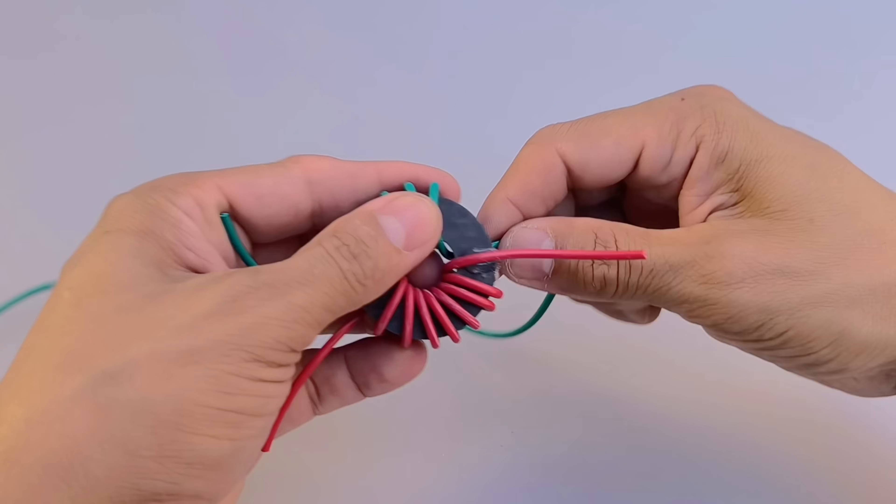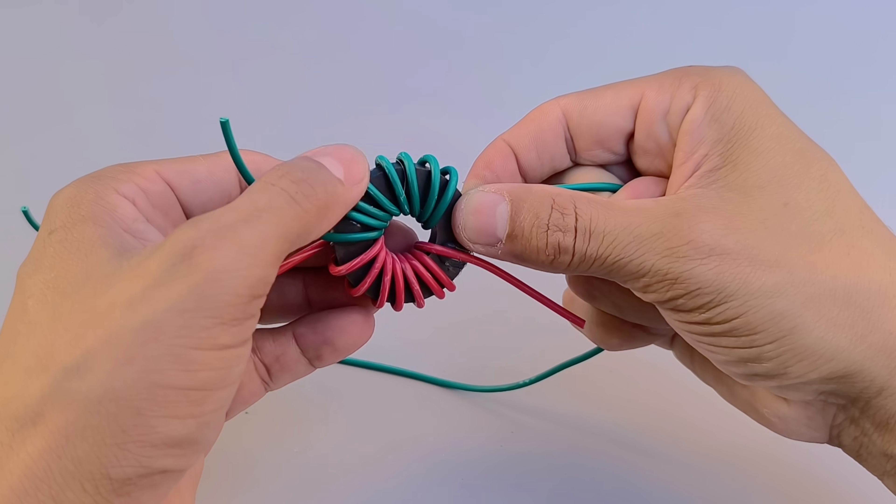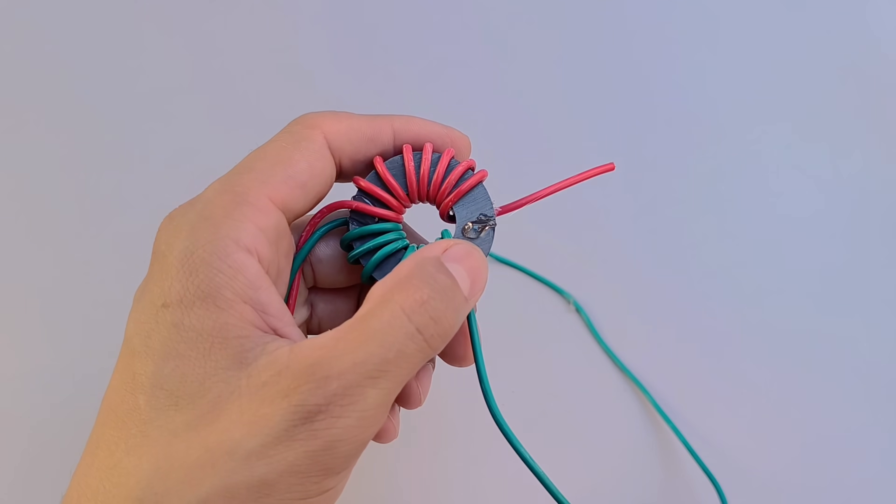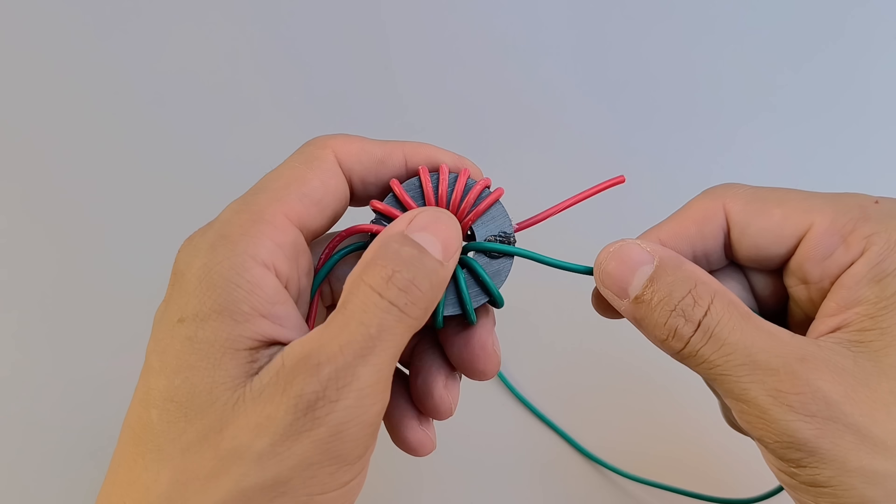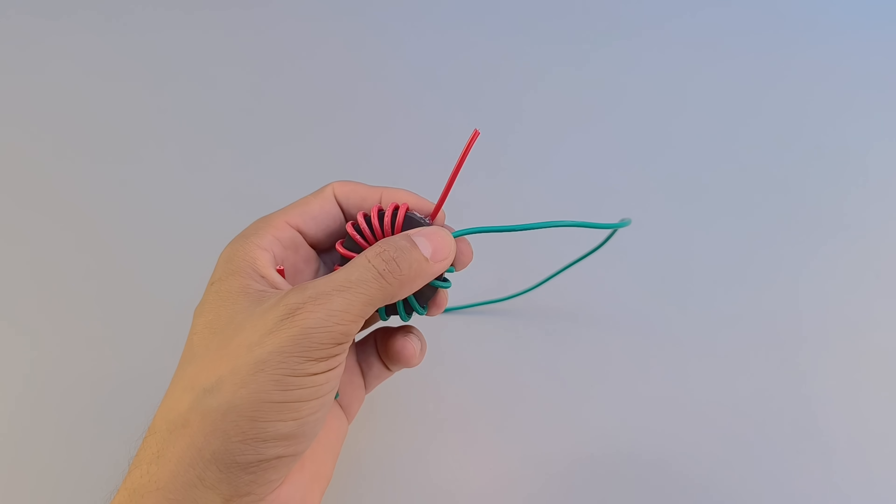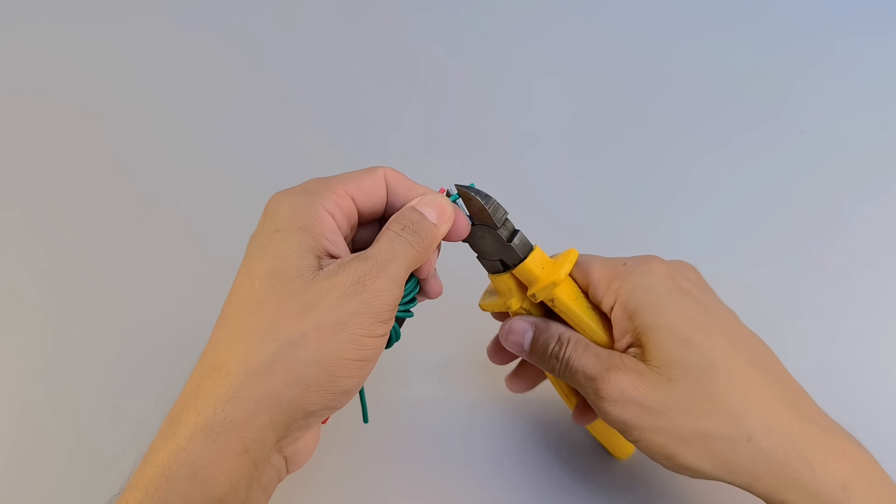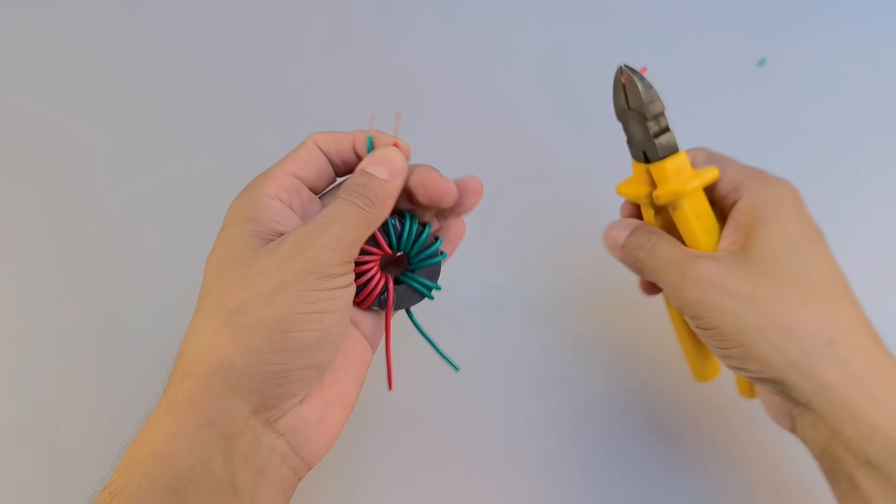Remember, the secret lies in the precision of the turns and the good contact between the wire and the magnet. The firmer and more uniform the turns, the more efficient the magnetic field will be. With attention and patience, you will be ready to explore the fascinating principles of electricity and magnetism.